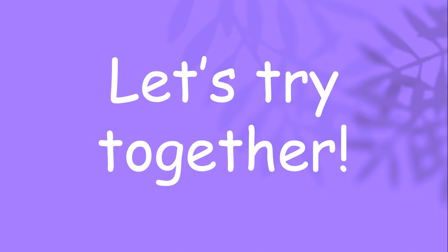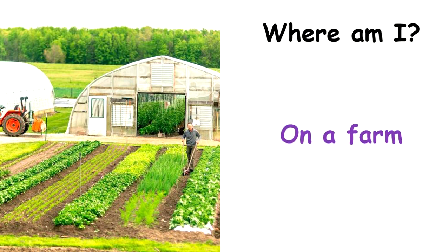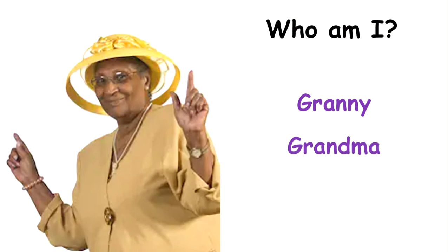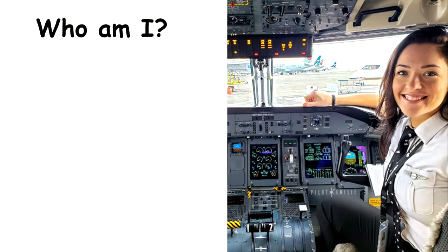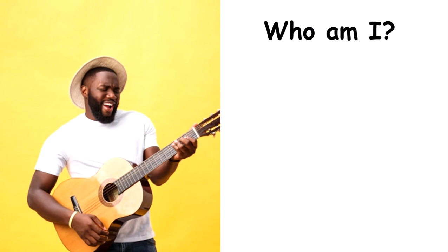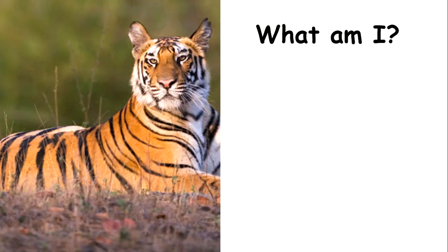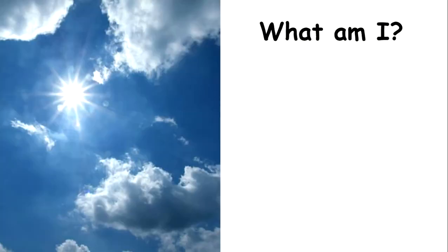Now let's try identifying some nouns together. Where am I? I am on a farm — so 'farm' is a noun. Who is this? This could be somebody's granny or grandma — those words are nouns. She is a pilot — so 'pilot' is a noun. He is a musician — so 'musician' is a noun. I am in the supermarket — so 'supermarket' is a noun. It is a tiger — so 'tiger' is a noun. It's the sky — and 'sun', 'cloud', and 'sky' are all nouns.